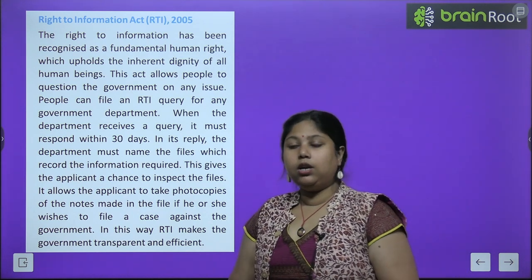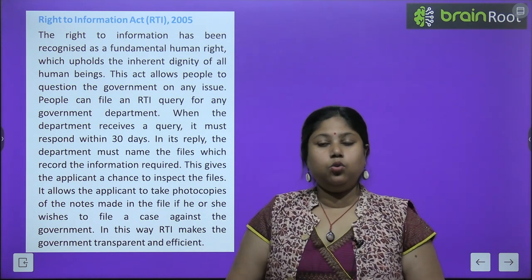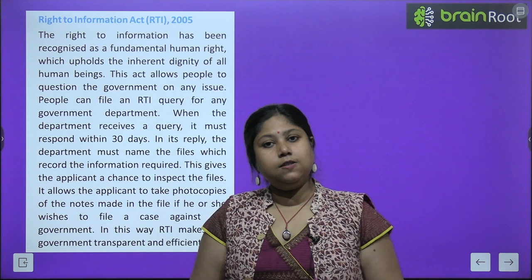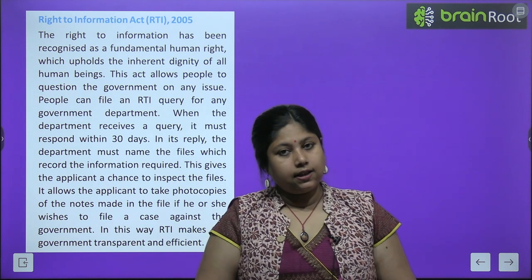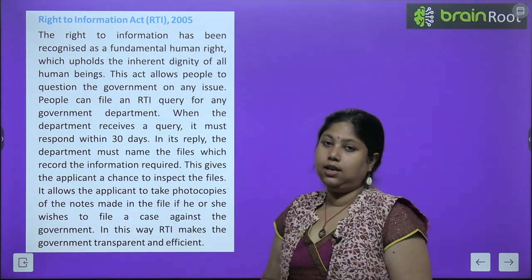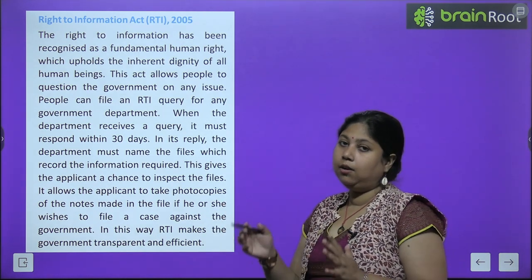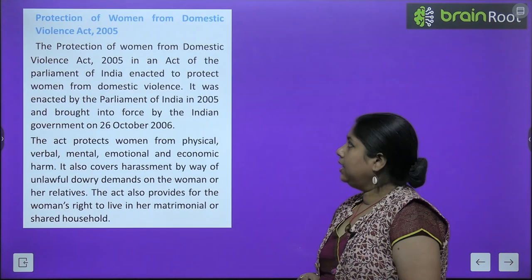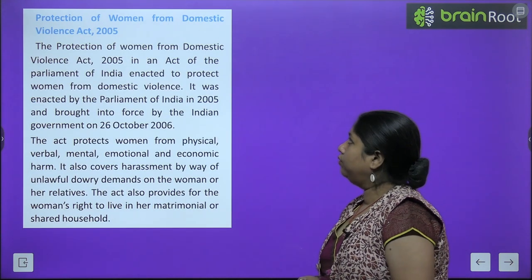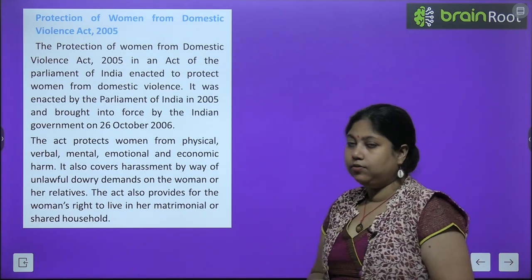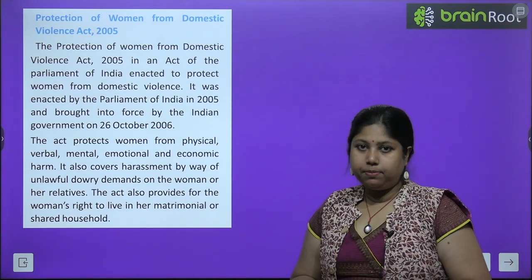Because of RTI, the government works quite transparently and efficiently — the government knows that people can question them and they are liable to answer; they cannot refuse. Next is the Protection of Women from Domestic Violence Act, also launched in 2005 in India.